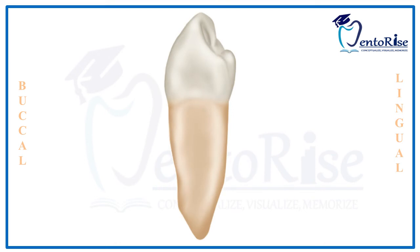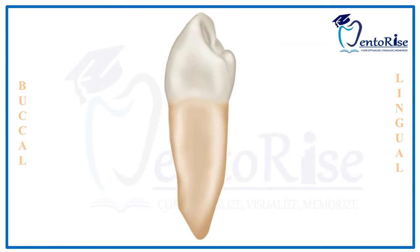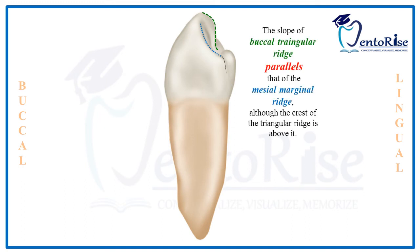Because of the difference in length of the buccal and lingual cusps when measured from the cervical line, some of the occlusal aspect can also be seen from the mesial aspect. As demarcated in green, the mesial contact area can be seen, and as demarcated in red, the mesial marginal ridge can also be seen. This mesial marginal ridge has a sharp inclination lingually in the cervical direction. Along with the mesial marginal ridge, the buccal triangular ridge can also be seen from the mesial aspect, and it is parallel to the mesial marginal ridge. However, the crest of the buccal triangular ridge is present above the crest of the mesial marginal ridge.